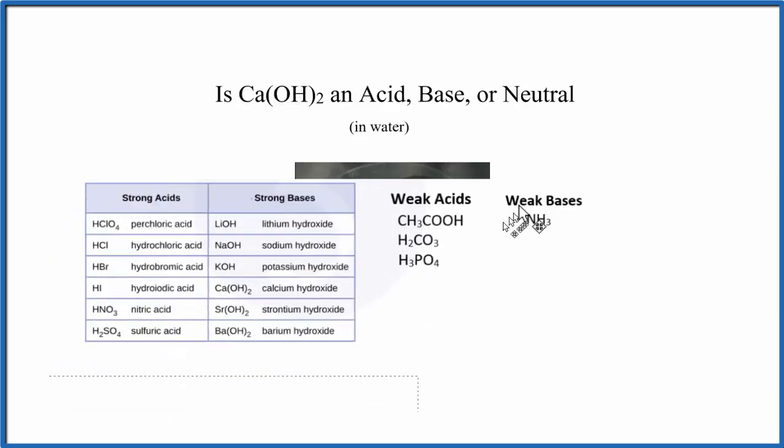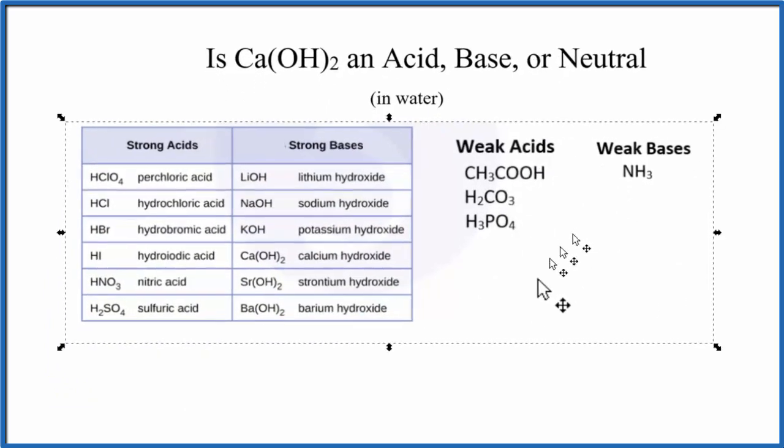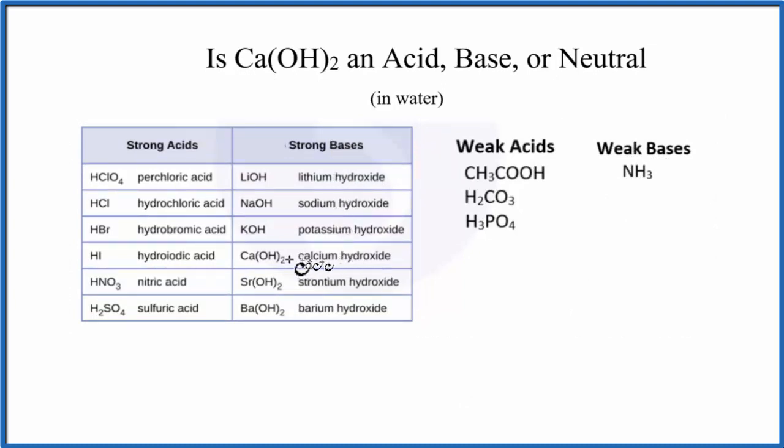You could also memorize a list of the strong acids, strong bases, and weak acids and weak bases. If you do that, you'll see coming down our list here that calcium hydroxide is a strong base. So we've established that calcium hydroxide is a base.